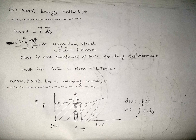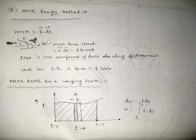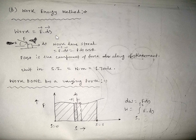F·cosθ is the component of force along the direction of displacement, as shown here. Splitting F into two components: one acts along ds, causing the displacement — this component does work equal to its product with ds. The perpendicular component causes no displacement and therefore does no work. In SI units, work is expressed in Newton-meters, and one Newton-meter equals one joule.